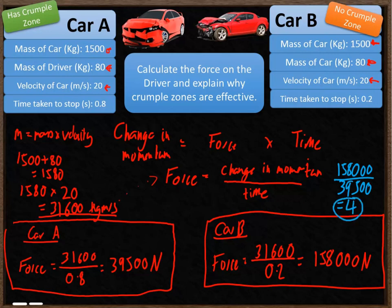That means that car A compared to car B is 4 times the force in car B. So if I get a crumple zone, it reduces the force by 4 times to 39,500 newtons, which is a significant reduction in the amount of force.